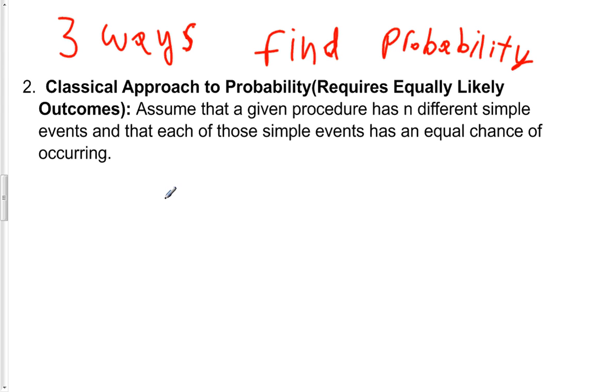So what we're going to do is assume that a given procedure has N different simple events in sample space, and that each of those simple events has an equal chance of occurring, equally likely.